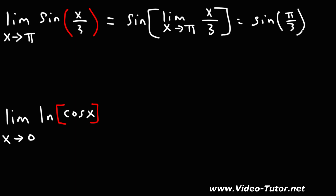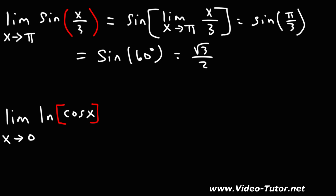Now pi is equal to 180 degrees. If you divide that by 3, that becomes 60. So this is equivalent to sine of 60 degrees, which is equal to the square root of 3 over 2. That's all we need to do for the first example.